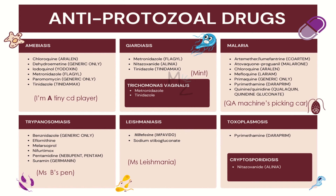Malaria is treated with the following drugs: artemether or lumefantrine, atovaquone-proguanil, chloroquine, mefloquine, primaquine, pyrimethamine, quinine, and quinidine. The mnemonic for anti-malarial drugs is 'QA machines picking car' — Q is for quinine or quinidine, A is for artemether with lumefantrine and atovaquone-proguanil, M is for mefloquine, P is for primaquine and pyrimethamine, and C is for chloroquine.